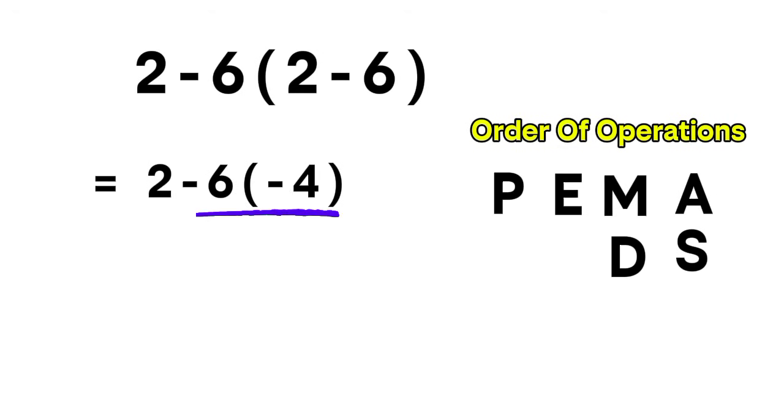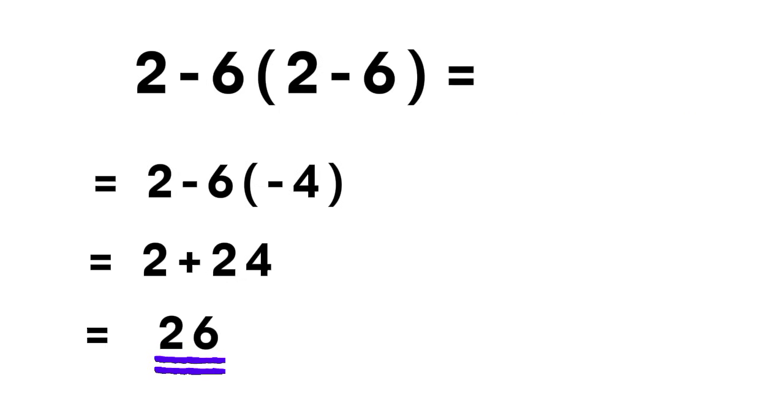So negative 6 times negative 4 gives us positive 24. Now we have 2 plus 24, which equals 26. And this is our final answer. The correct answer is 26.